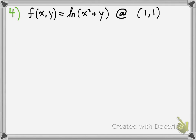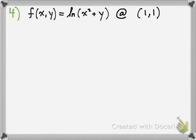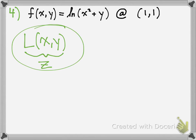Now we go over linearization. Linearization is essentially finding the tangent plane — you could call it planarization, since we're finding a plane, not a line. The notation is: L(x, y) is treated as your z. That's the key here, so keep that in mind.